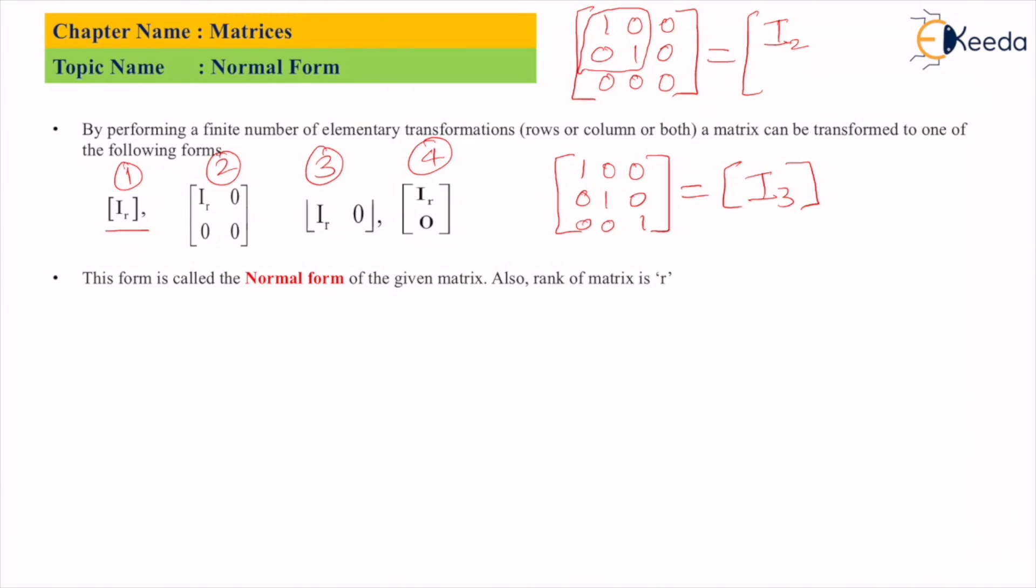So in this matrix we got two rows and two columns. Now one row and one column is missing, so we'll add more zeros. Now this will become a matrix with three rows and three columns.